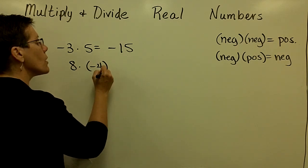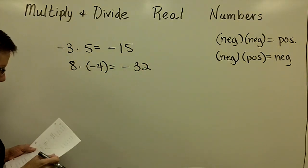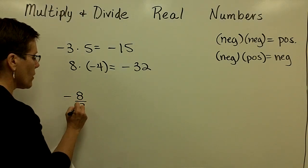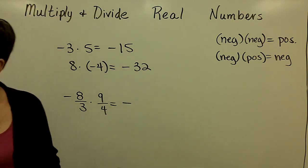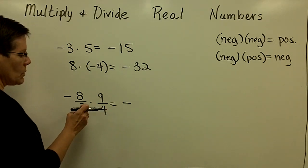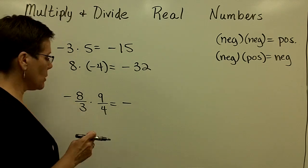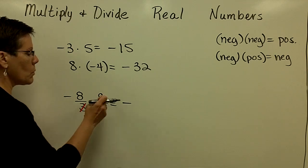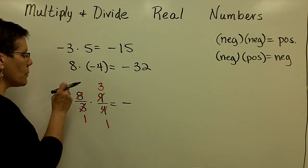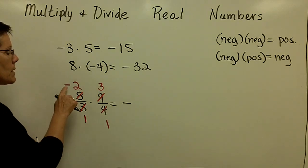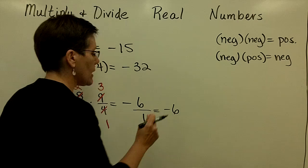8 times a negative 4: a positive times a negative gives a negative result, and 8 times 4 is 32, so the answer is negative 32. Let's look at a fraction: negative 8 thirds times 9 over 4 is a negative times a positive, giving a negative result. Instead of multiplying to get negative 72 over 12 and then reducing, I'll cross-cancel: 3 goes into 3 once and into 9 three times; 4 goes into 4 once and into 8 twice. So I get negative 2 times 3 over 1 times 1, which is negative 6.